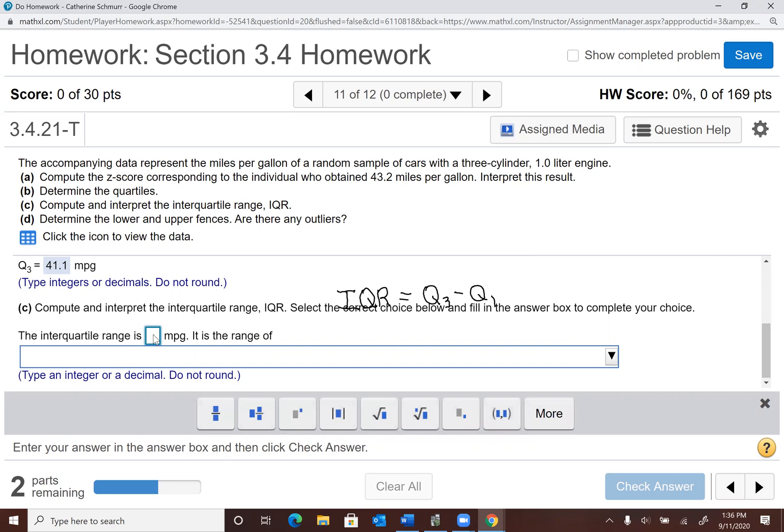Now, what that is, the interquartile range is 4.25. And it is the range of the middle 50% of the data. Because remember, Q3, the third quartile, that's like the 75th percentile. Q1, the first quartile, is the 25th percentile. So think quarters, like one quarter is 25 cents, two quarters is 50 cents, three quarters is 75 cents. So I have the 75th percentile minus the 25th percentile. So that's the middle 50%.